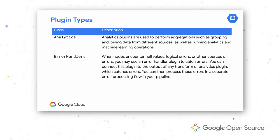We have analytics plugins, used for joining data. For example, joining purchases data with customers to find out which customer made which type of purchase. Error handler plugins are also very useful — if you want to redirect records that are in error or couldn't be processed to a separate placeholder, you can use an error collector. Later you can examine why a record didn't get processed without losing those records while your pipeline runs.